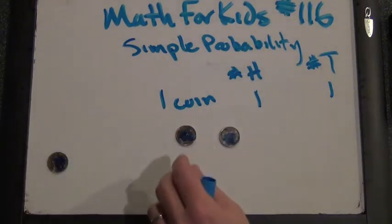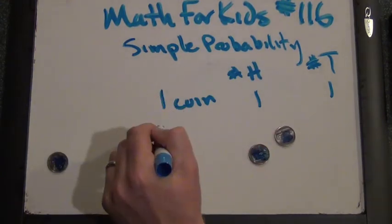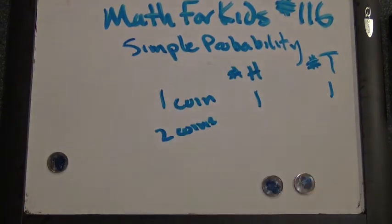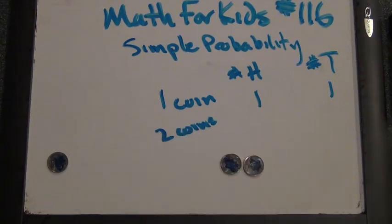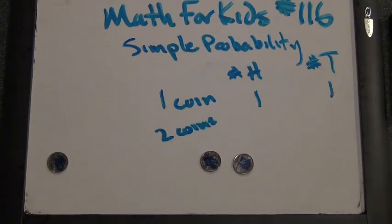Now what if you flip two coins? What might you get? Well, two coins. You're going to flip two coins. What are the possibilities that you can get? One head for one coin and one tail for one coin, and one head for the other coin and one tail for the other coin.